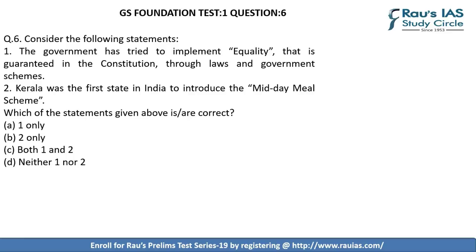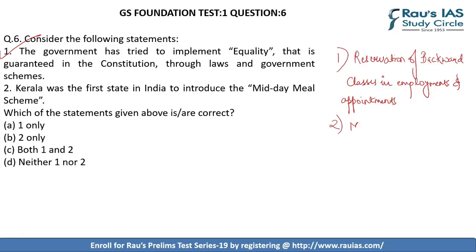Question 6 contains two statements. The first says the government has tried to implement equality guaranteed in the constitution through laws and government schemes. This is correct — for example, reservation of backward classes in employment, and schemes like the midday meal scheme to ensure children from lower economic backgrounds are well-nourished. The second statement says Kerala was the first state to introduce the midday meal scheme, which is incorrect — Tamil Nadu was the first. Hence the correct option is A, that is statement 1 only.